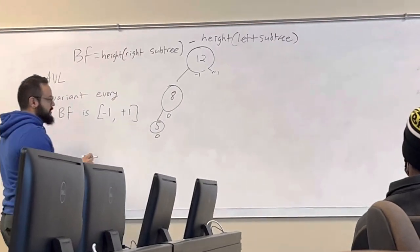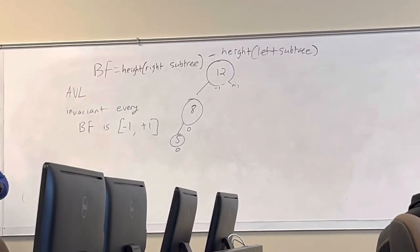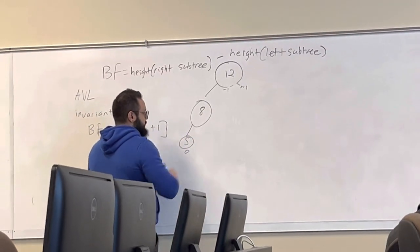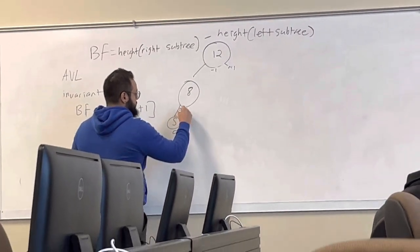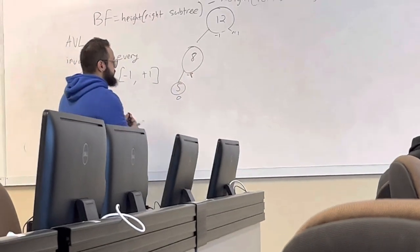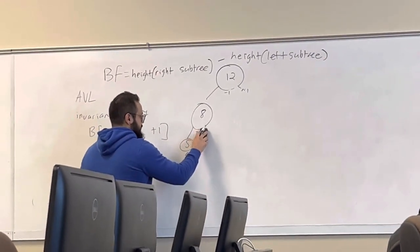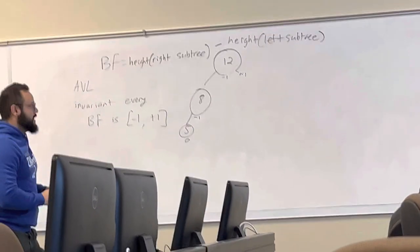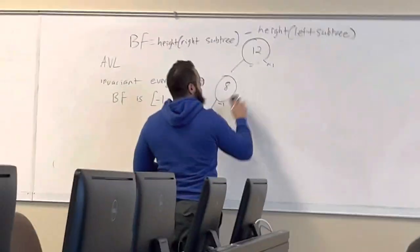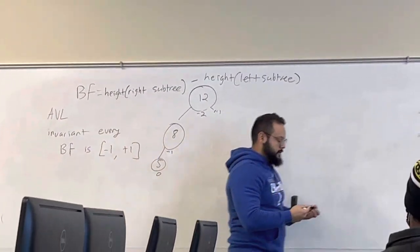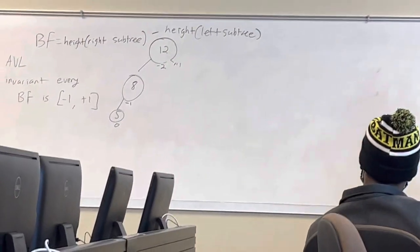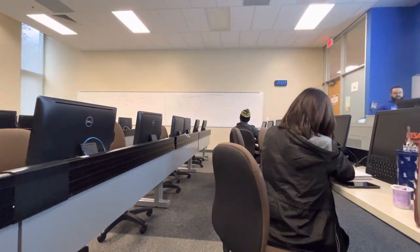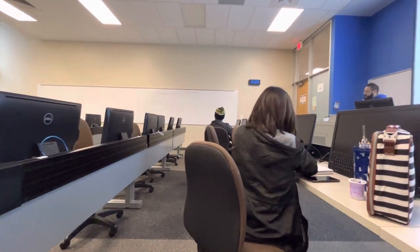So, what is the balancing factor after this insertion? Negative two. For, yes, for the root node it is negative two. For node eight, or excuse me, node eight, negative one. Negative one. And then for the root, negative two. So, now, the balancing factor is incorrect for one of these nodes, and we have to do a rotation to correct it.